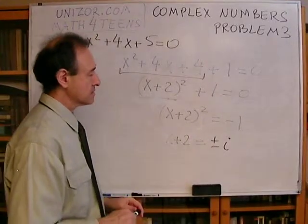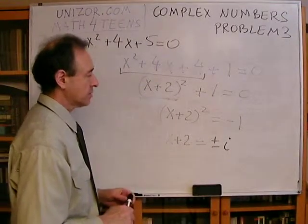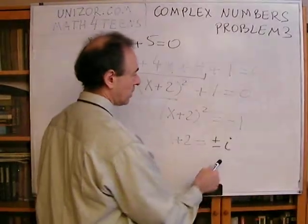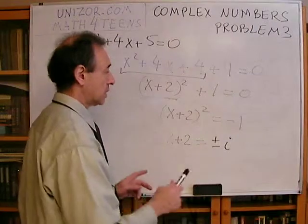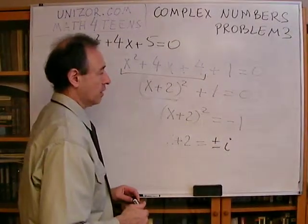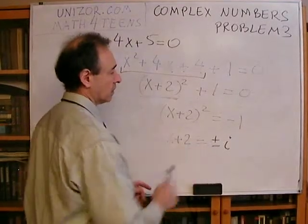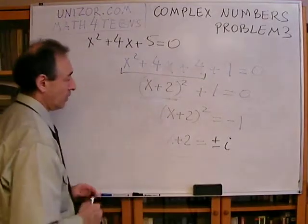Why is it plus or minus i? Well, obviously, because i squared is minus 1, and minus i squared is also minus 1. So whenever we are extracting the square root from any number,